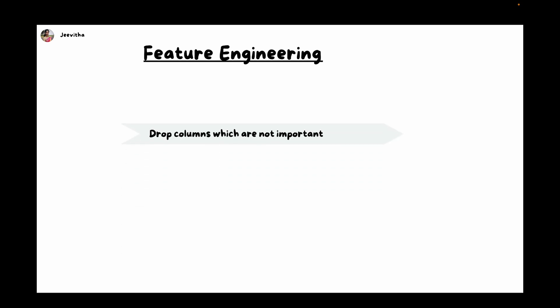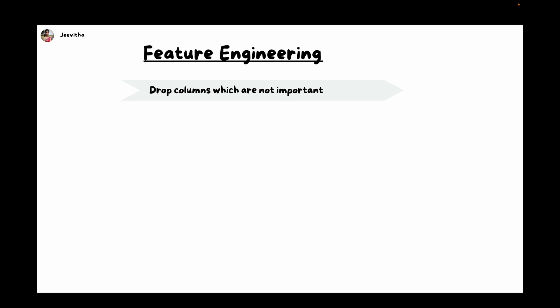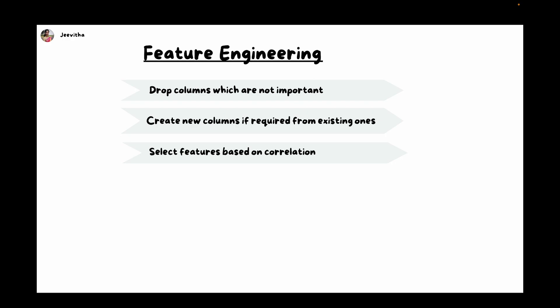The next important step is feature engineering. Under feature engineering, we try to focus on selecting the best features. We drop columns that are not really important, create columns if required from existing ones, select features based on correlation, and use feature selection techniques like forward selection, backward selection, and feature importance. When you have hundreds of columns, training a model with all those columns is not a good habit — your model might overfit. To overcome that, select only the features that are really important.